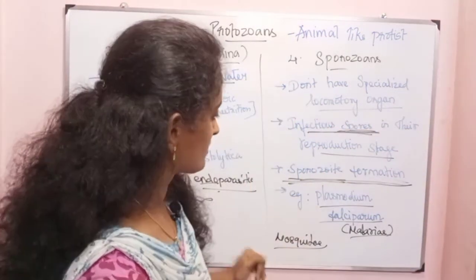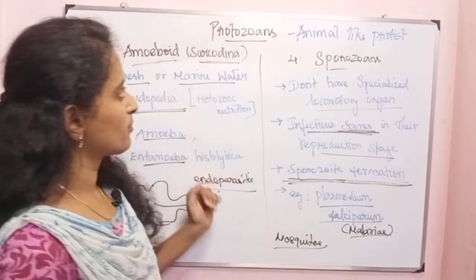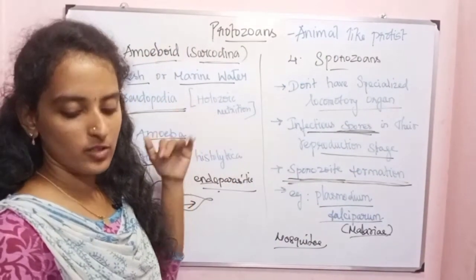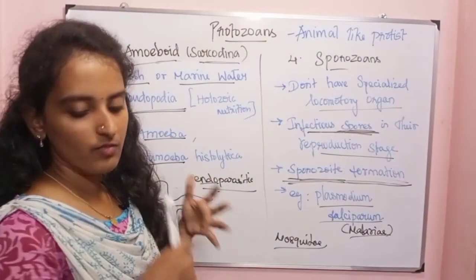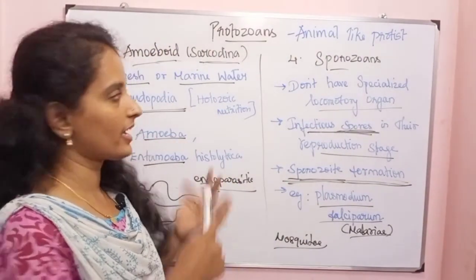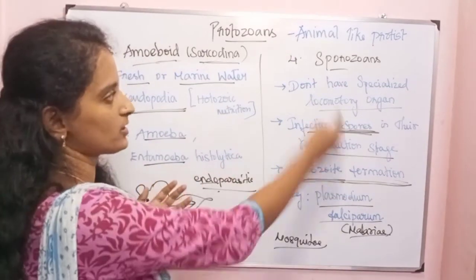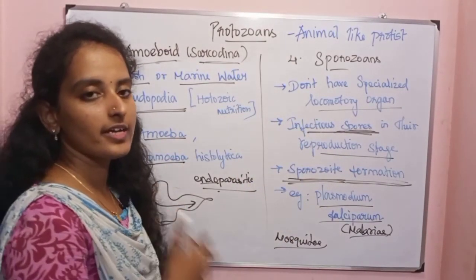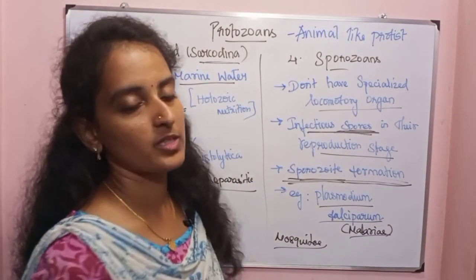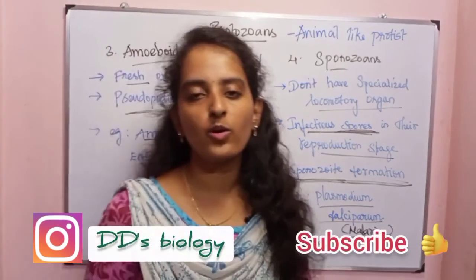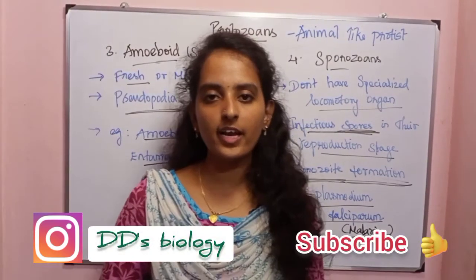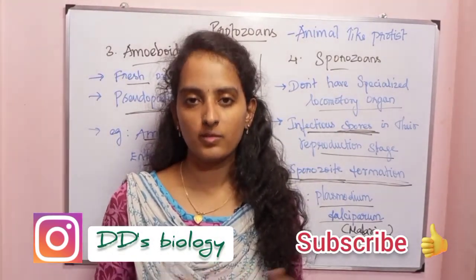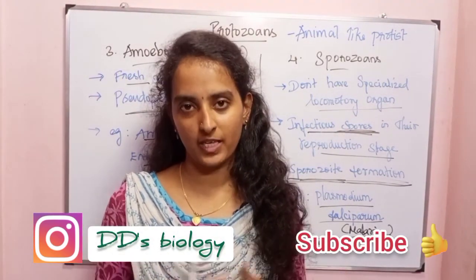These are all four types of protozoans: flagellates, ciliates, amoeboids, and sporozoans. These are the main characters of protozoans. Please like, share, and subscribe.